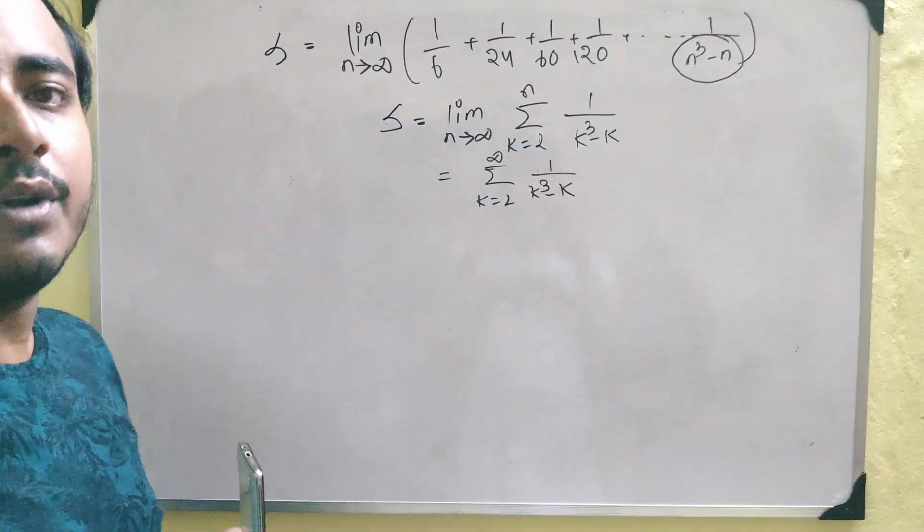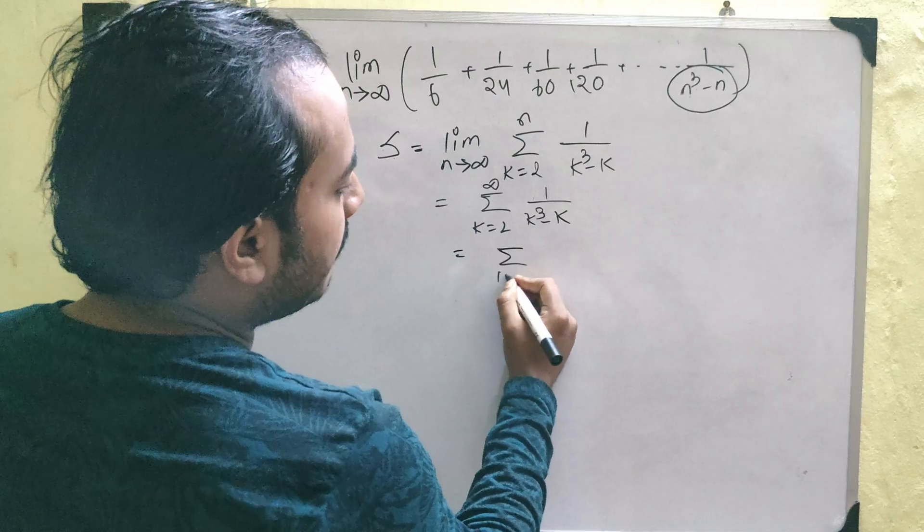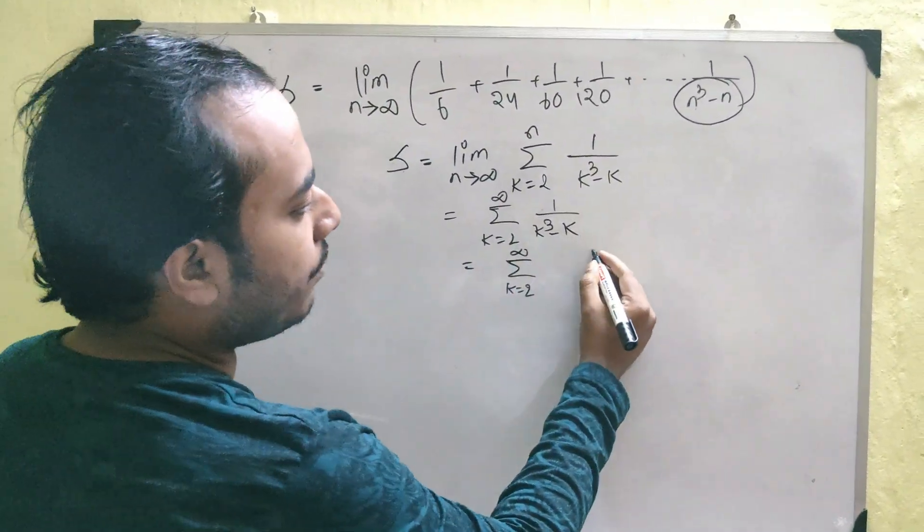So, this is the sum we are going to evaluate. Now, this kind of sums are very easy to evaluate because of something called telescopic nature. These are called telescopic sums. I will show you how.